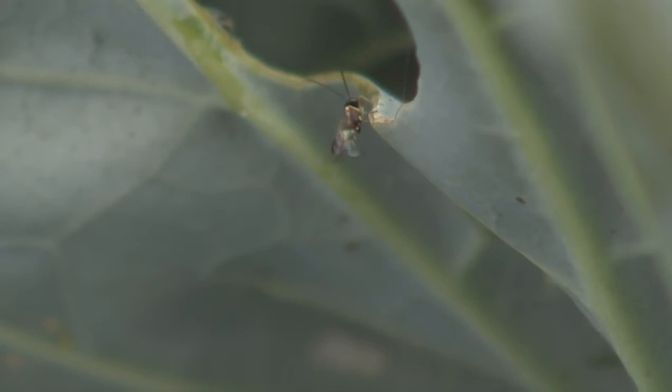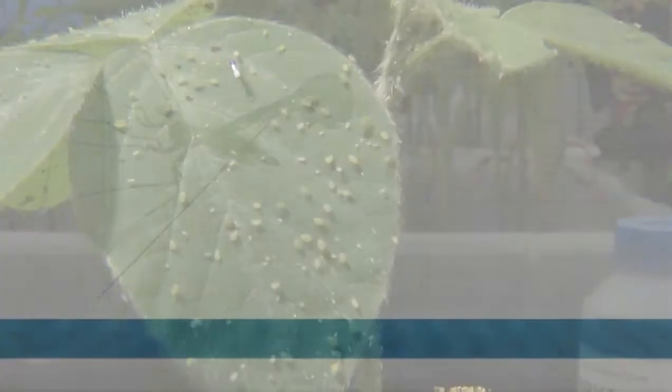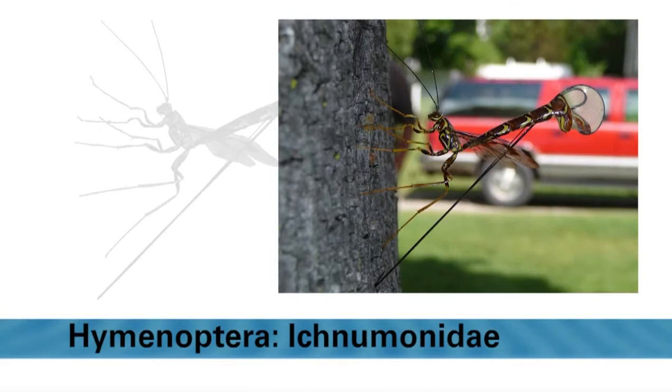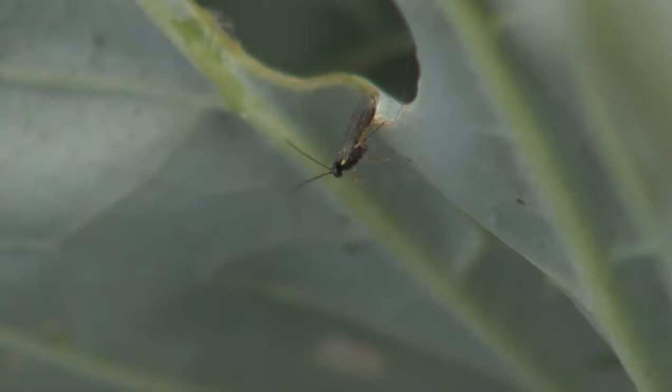Flies are not the only important group of parasitoids. The wasp order Hymenoptera includes many parasitoid species. Parasitoid wasps vary in size from very small wasps less than 1/16th of an inch to species greater than one inch in length. Parasitoid wasp females have a modified sting called an ovipositor, which they use to deposit their eggs inside insect pests. Here a female parasitoid in the family Ichneumonidae is extending her ovipositor into a tree trunk to lay eggs inside beetle larvae feeding inside. Many Ichneumonidae species are important natural enemies of vegetable caterpillar pests. One example is Diadegma insulare, a parasitoid that attacks diamondback moth larvae in brassica crops.